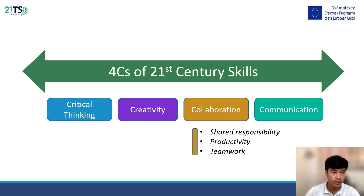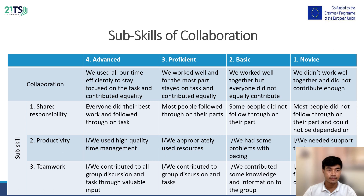We will now move to the third C: collaboration. There are three sub-skills: shared responsibility, productivity, and teamwork. For overall collaboration: at the advanced level, we use all our time efficiently to stay focused on the task and contribute equally. At the proficiency level, we work well and for the most part stay on task and contribute equally. At the basic level, we work well together but everyone does not contribute equally. At the novice level, we did not work well together and did not contribute enough.